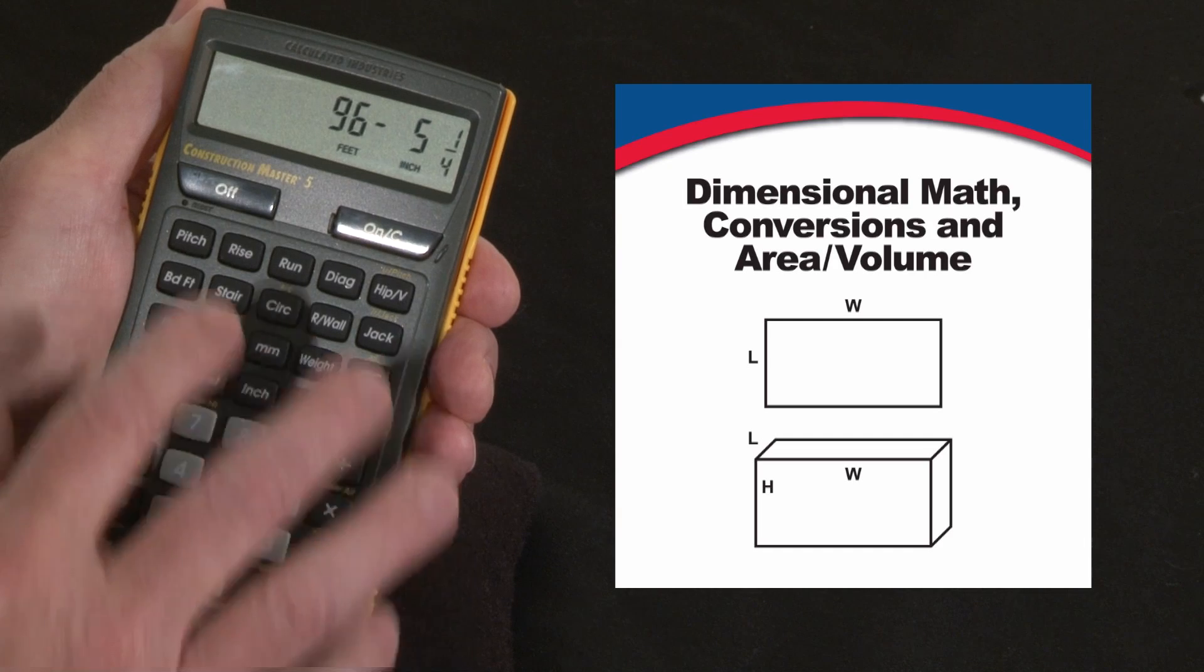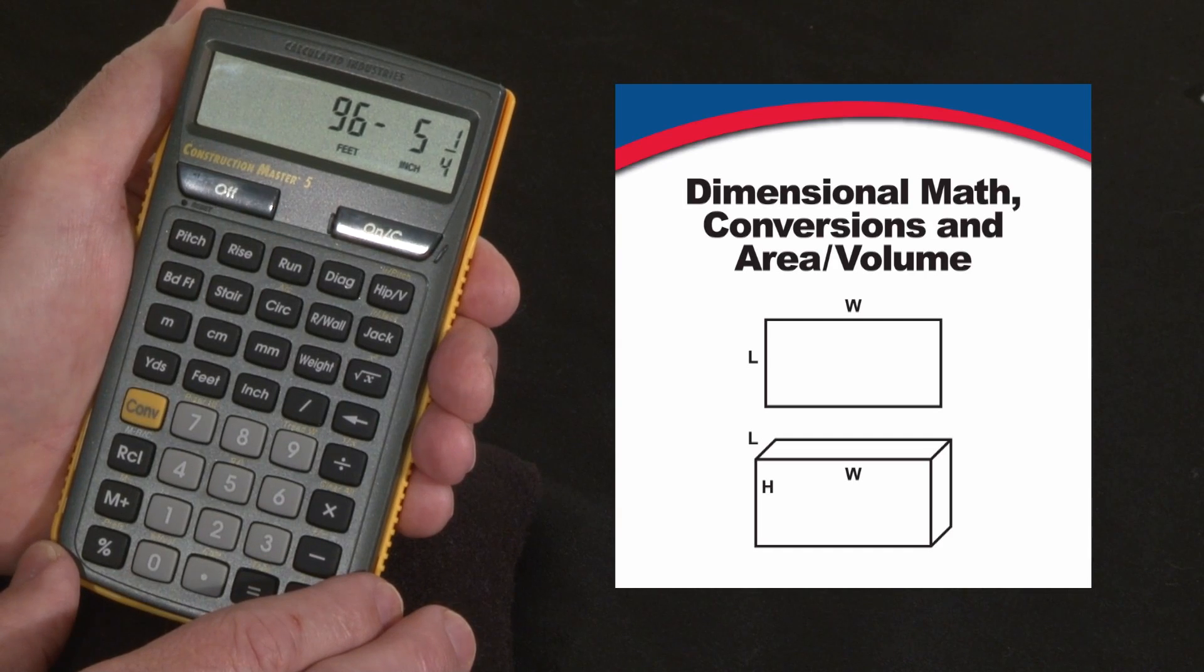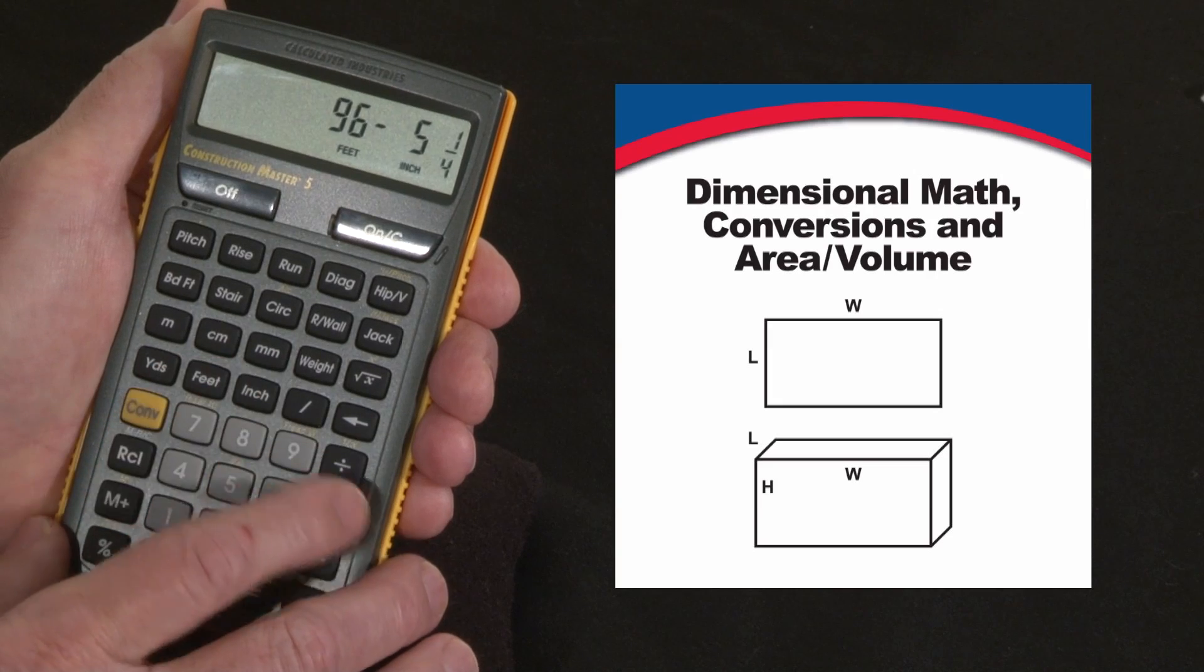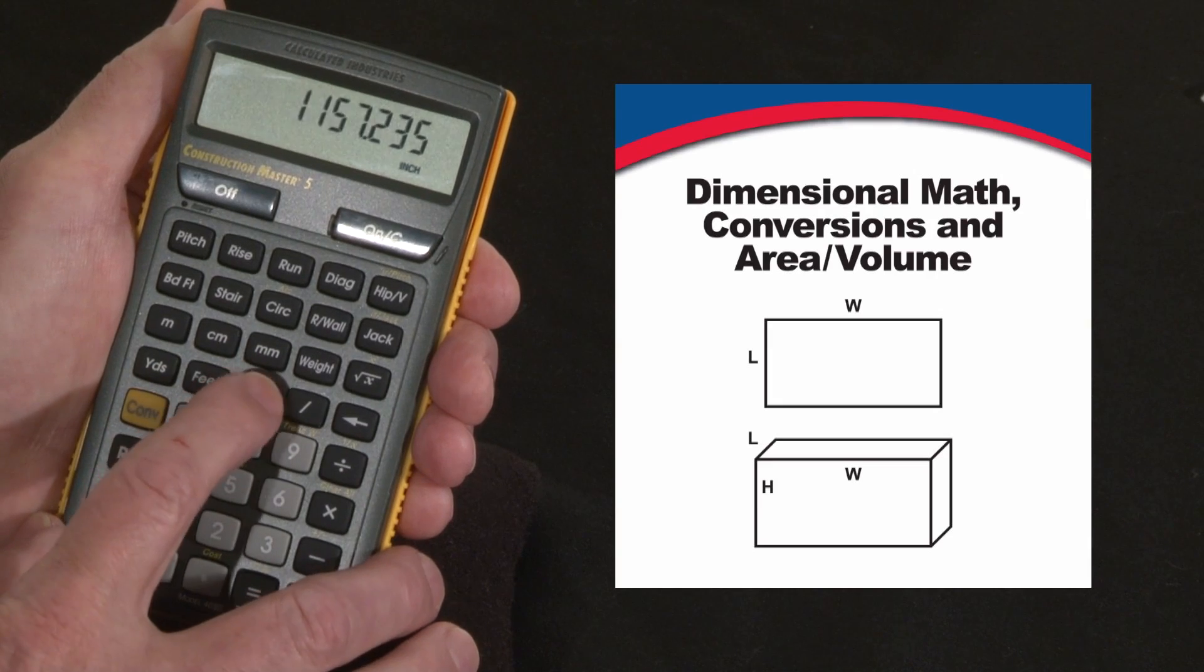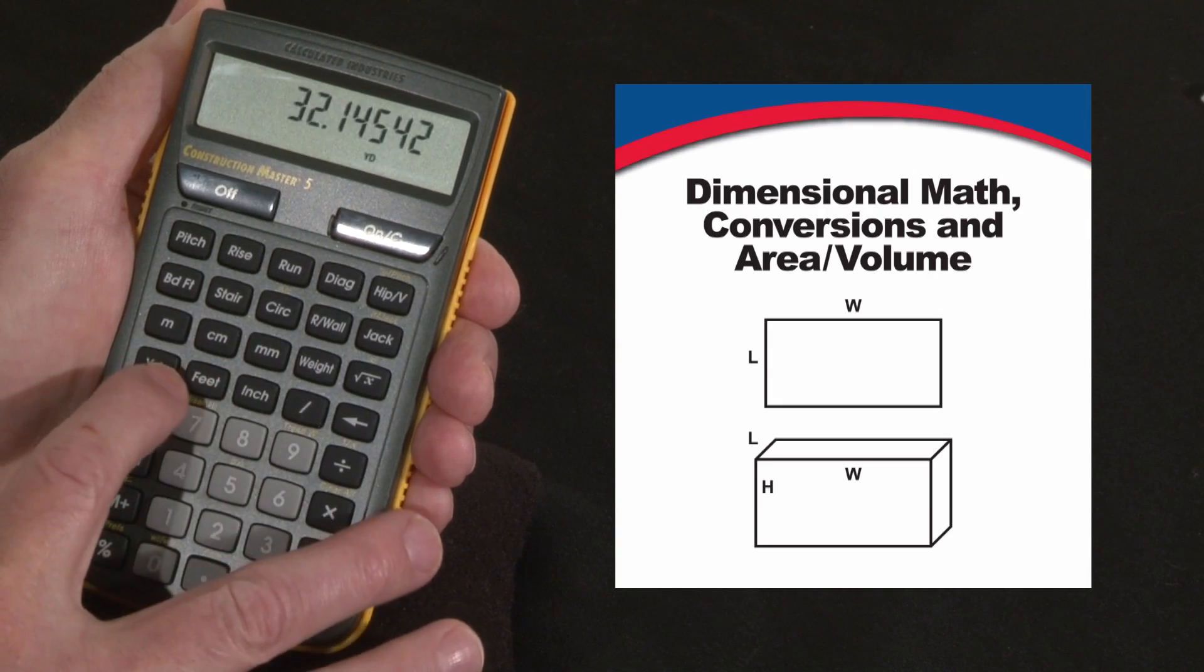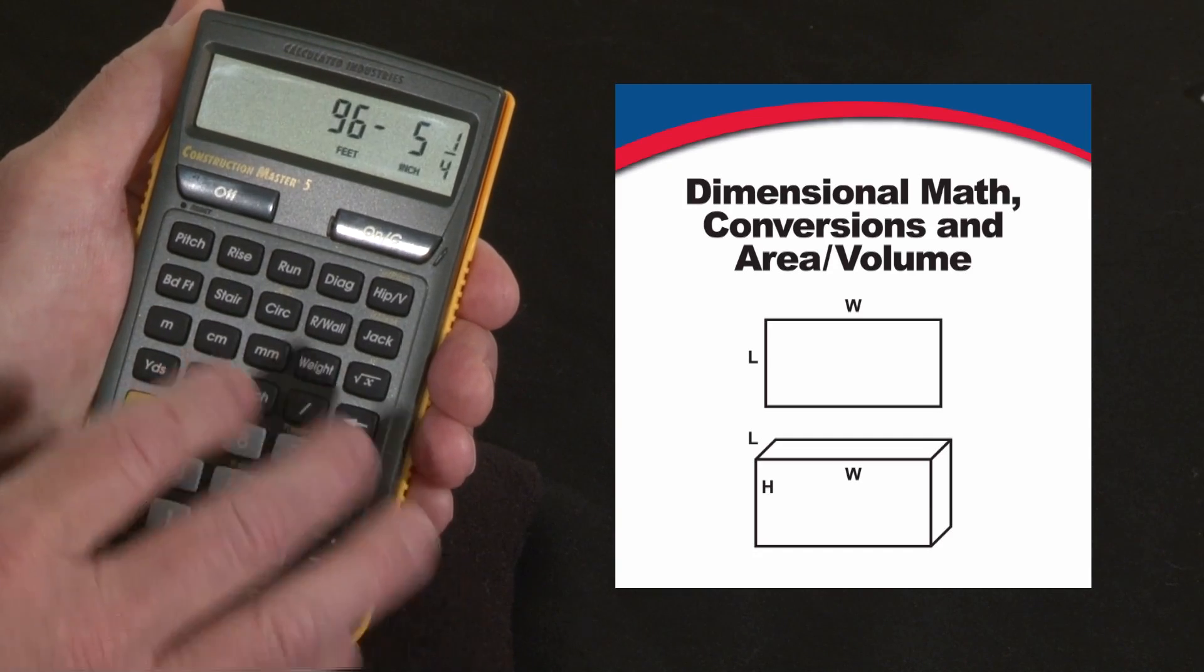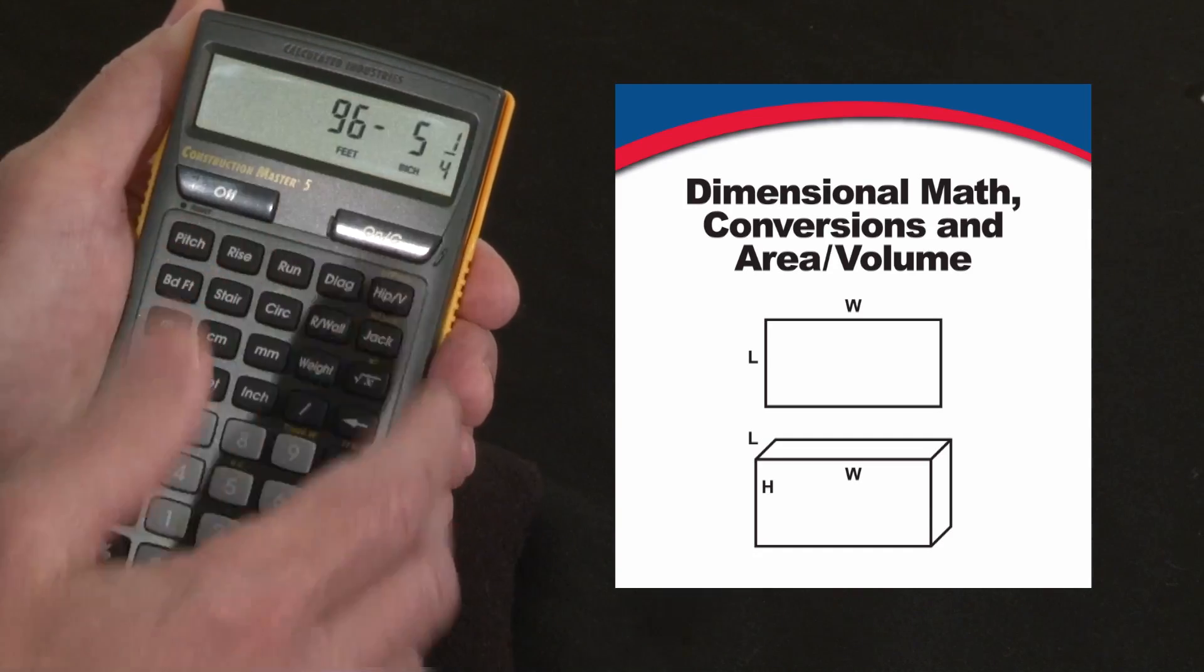Hit the equals key—it'll come back in the format we started with, which was feet-inch-fraction. If you don't like that, you can always convert tenths and hundredths back to feet-inch-fraction, inches and fractions only, inches decimally. You can go to yards, meters, centimeters, millimeters, back to feet-inch-fractions. You can also divide and manipulate these numbers.